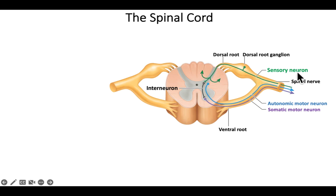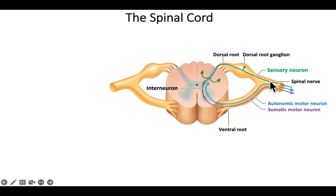We can see those sensory neurons here shown in green. Here is just one sensory neuron — the other end might be at the skin, and its job is to detect pain. The pain will activate the neuron, it'll transmit its action potential, and it's going to travel into the spinal cord. Notice that the sensory neuron uses the dorsal root.